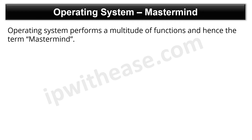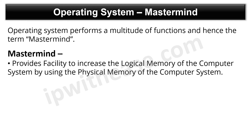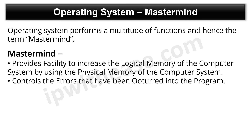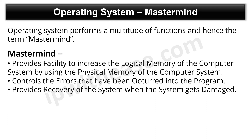Mastermind is one term we can rightfully use for an operating system, because the operating system performs a multitude of functions which can only be performed by a super-intelligent mind, hence the term mastermind. Some of the functions which justify this term are: it provides facility to increase the logical memory of the computer system by using the physical memory; the OS controls errors that have occurred in the program; it provides recovery from the system when the system gets damaged; and the operating system breaks large programs into smaller programs, also called threads, and executes those threads one by one.